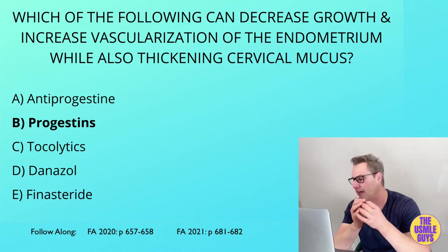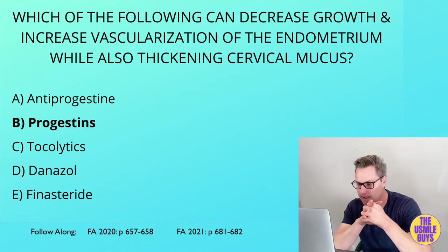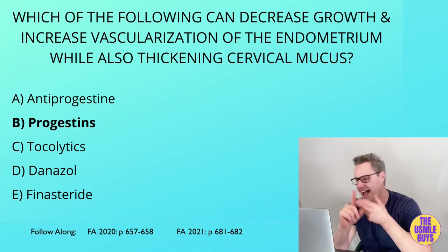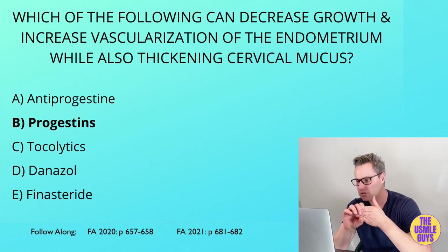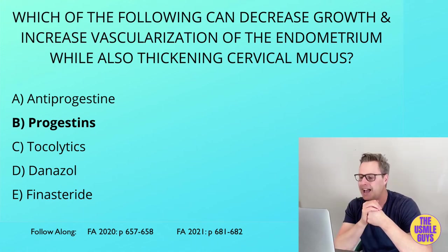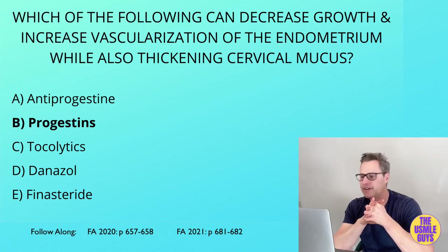Danazol is used in cases of endometriosis and hereditary angioedema. It works as a synthetic androgen that acts as a partial agonist at the androgen receptors. Its unwanted side effects include acne, weight gain, masculinization, hepatotoxicity, decreased HDL levels, and idiopathic intracranial hypertension.